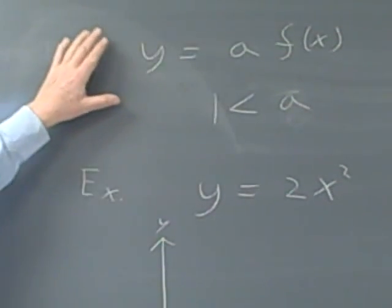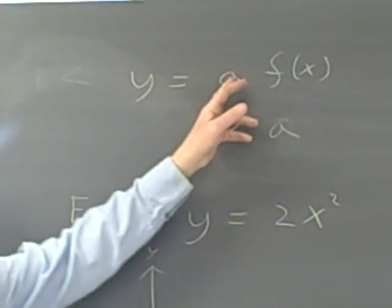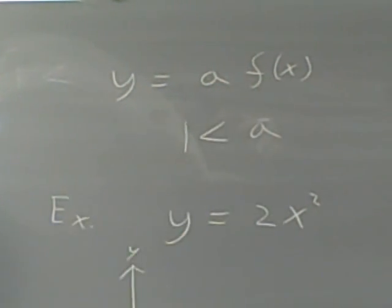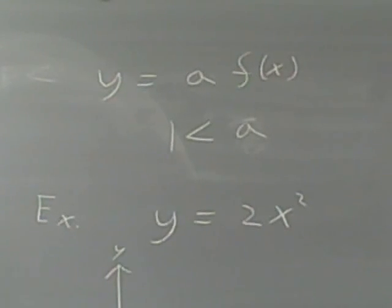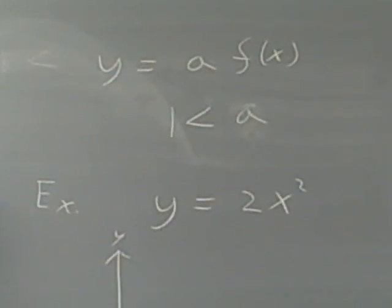And other things can happen to these functions besides being translated around. One of them is you can multiply the function by a coefficient like that. And if we look at a real number a greater than 1, we're going to multiply it times our function.